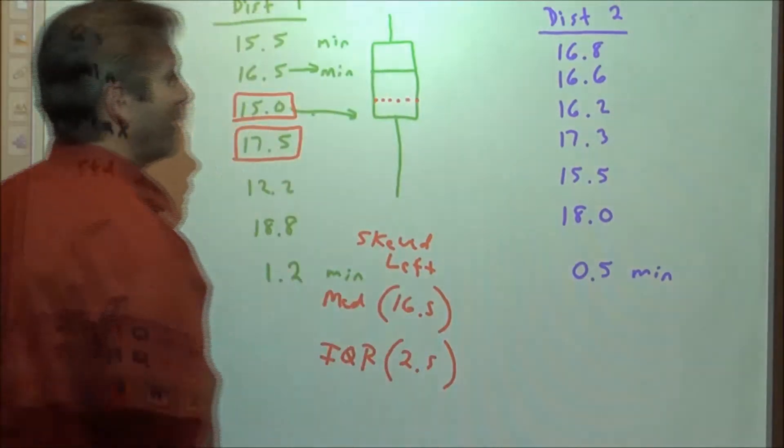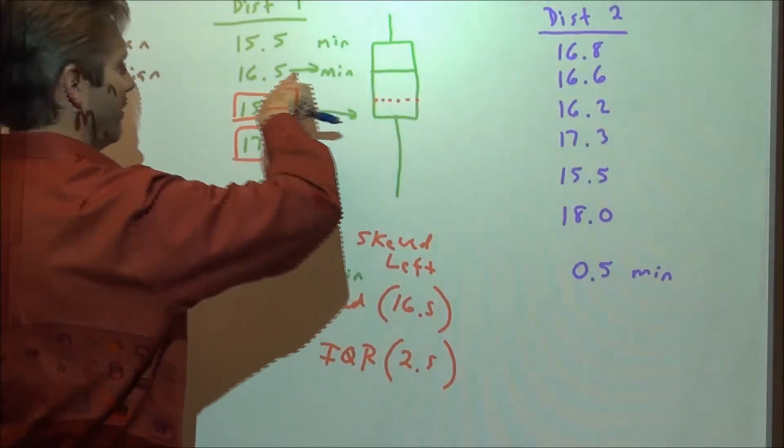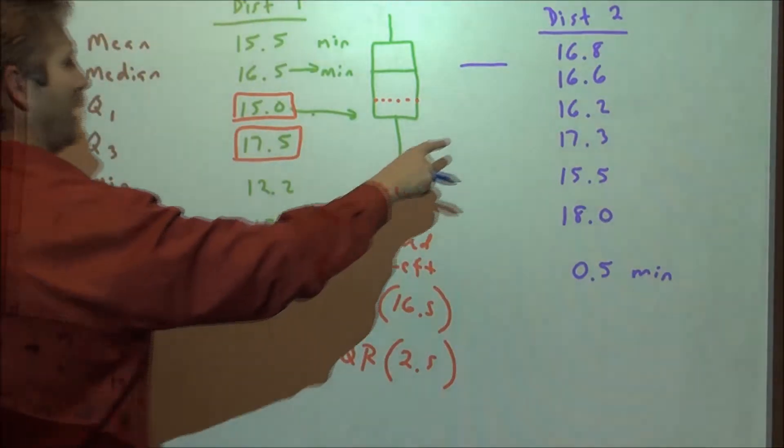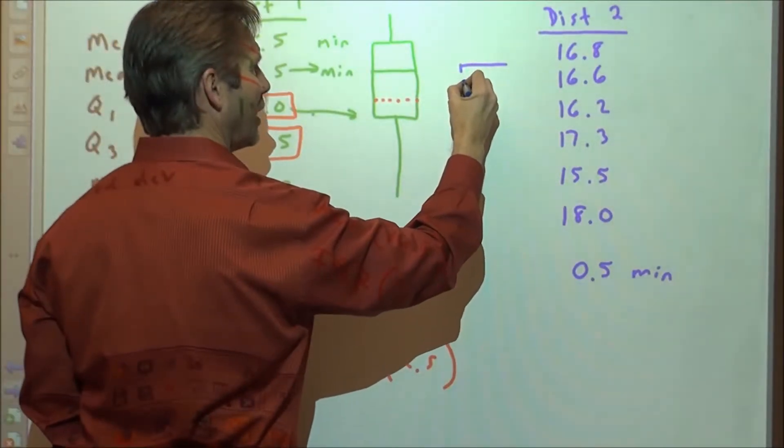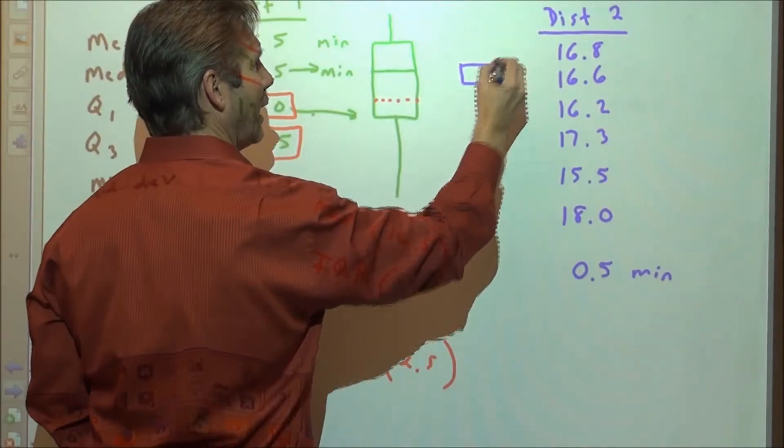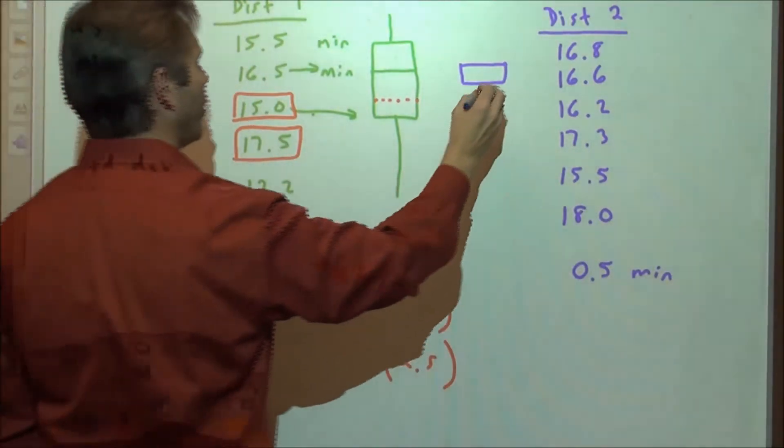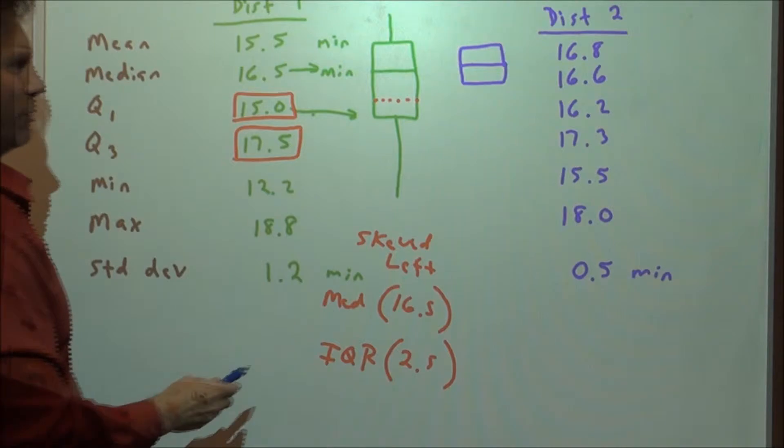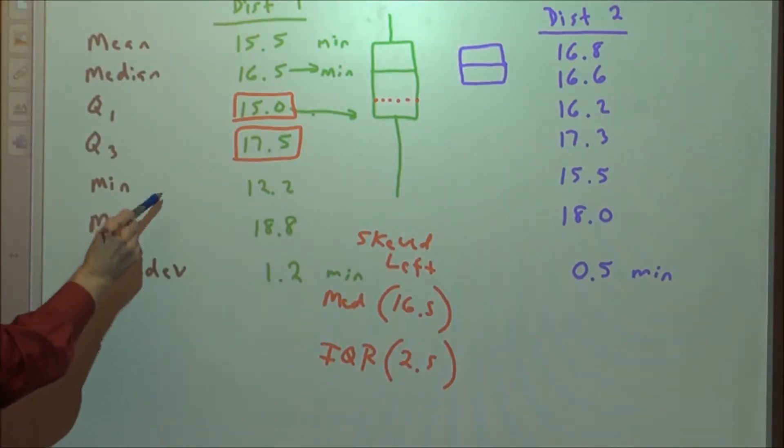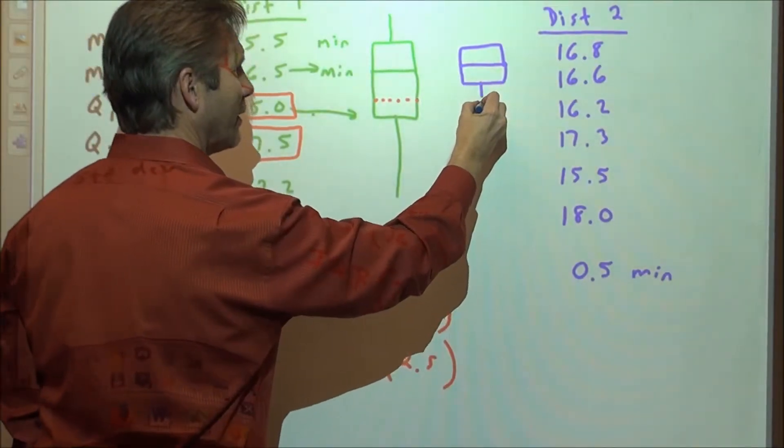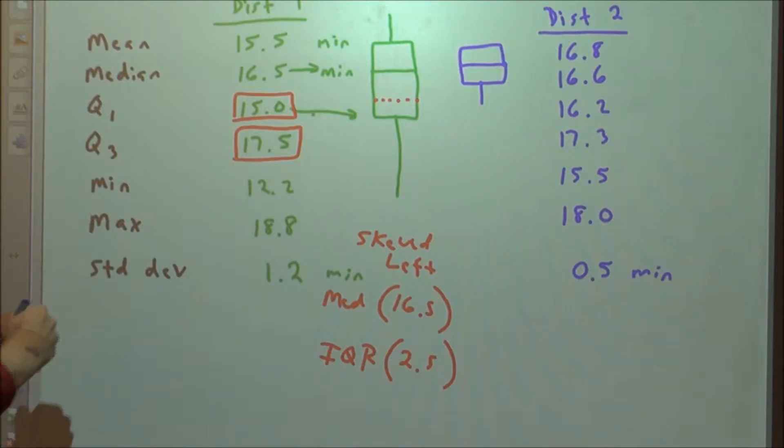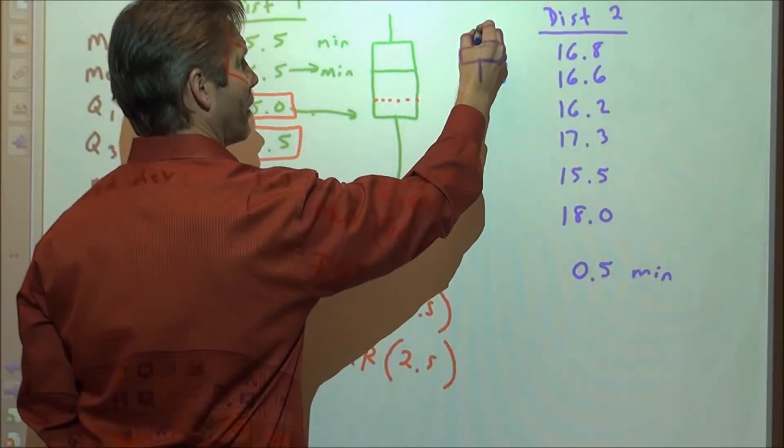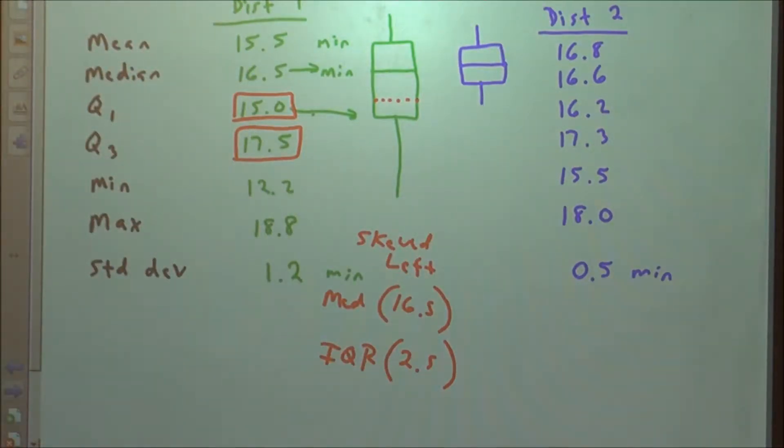Then we go to the second location. Its median is at 16.6. Their lower quartile is 16.2, upper quartile is 16.3. So that's their distribution, the interquartile range in there. The min is down at 15.5, and the max is at 18 minutes. So that is a box plot showing the second distribution.